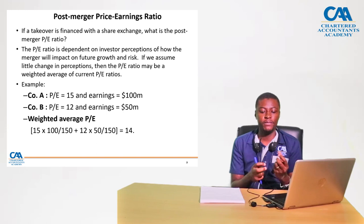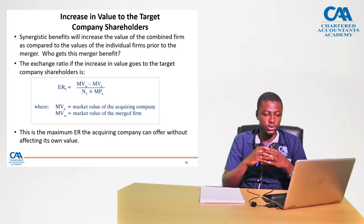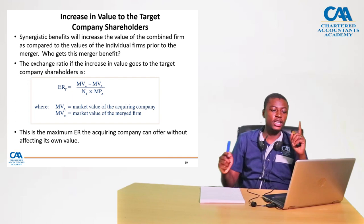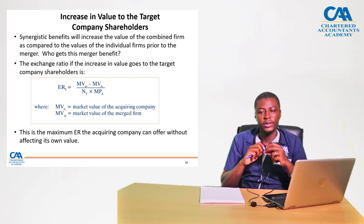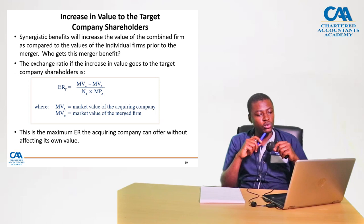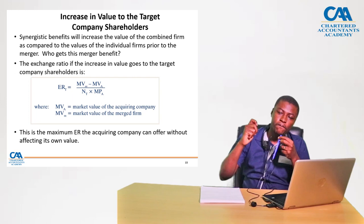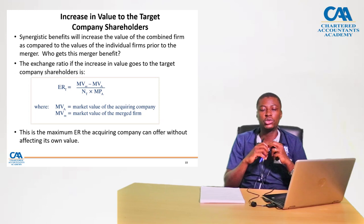What would increase value for the target company's shareholders? Synergistic benefits would definitely increase the value of the combined firm compared to the individual firms. The question is: who gets this merger benefit? There are two possibilities — either the value goes to the target company shareholders, or the value goes to the buying company shareholders. If the value goes to the target company shareholders, this brings us back to ask: what is the maximum price that the acquiring shareholders should pay to the target company shareholders? We then look at the exchange ratio from the perspective of the target company.